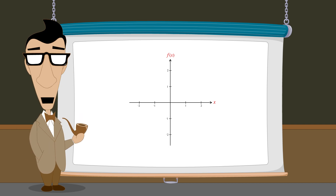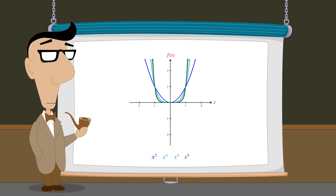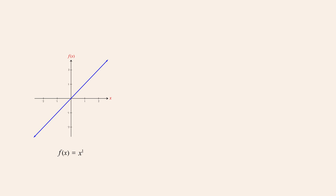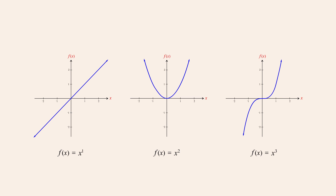So far, we have seen that the graphs of even powers of x have similar characteristics to the graph of x-squared, and the graphs of odd powers have similar characteristics to x-cubed. But how are these graphs affected by the value of the monomial's coefficient? To see the effect of a monomial's coefficient on its graph, let's look at three functions: x to the first power, x-cubed, and x to the fifth power. To start with, let's give each monomial a coefficient of one. As we previously showed, these graphs all pass through the origin and the point one.